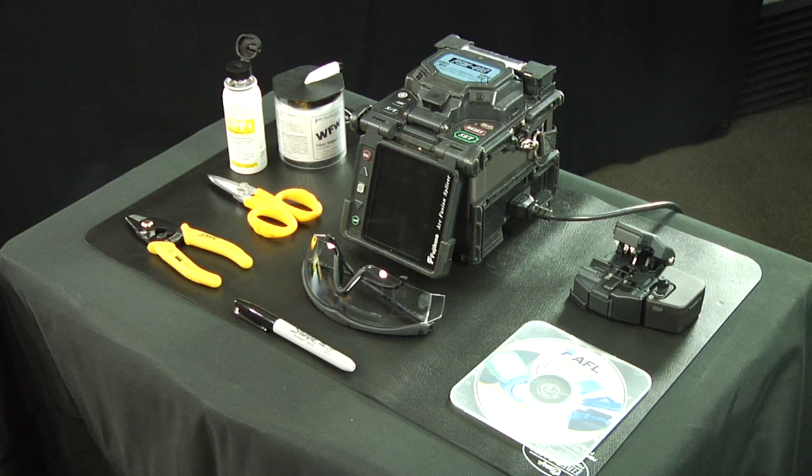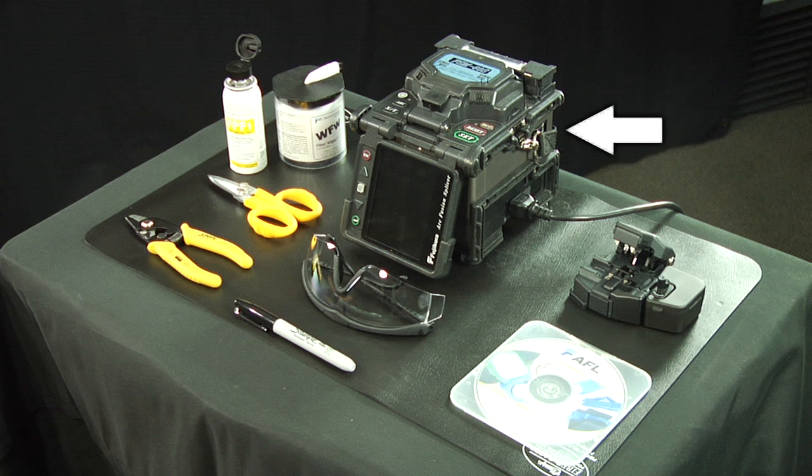The tools and materials required to complete installation: an FSM 60S fusion splicer, an instructional video on CD-ROM, a CT30A universal cleaver, a fiber and cable jacket stripper, Kevlar scissors, lint-free cloth wipes, safety glasses, fiber prep fluid, and a marker pen.